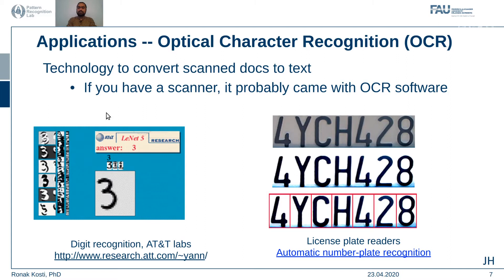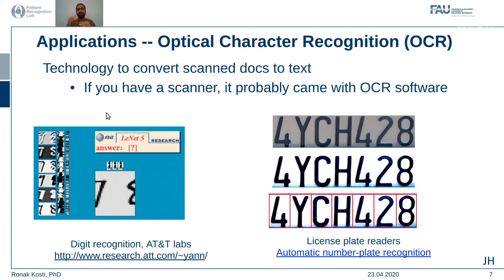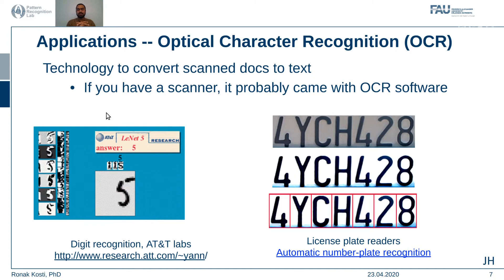For example, optical character recognition currently uses neural networks and generates predictions of what digit it recognizes from an image of a number plate. On the right you can see the original number plate — it is filtered, the background is cleared, each character is individually boxed and then recognized. This technology has been around for a few years now and vision is behind it.